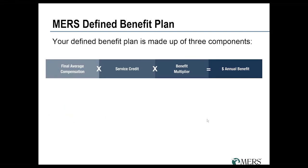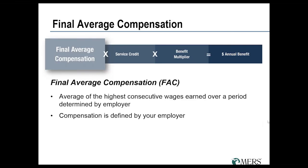The defined benefit formula is a three-part formula: your final average compensation, times your years and months of service credit, times your benefit multiplier — which is determined through negotiations between you and your employer. That's how your annual benefit is calculated. Final average compensation is an average of the highest consecutive wages earned over a period of time, normally either a three-year or five-year period.